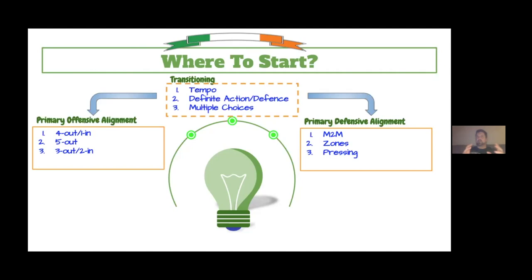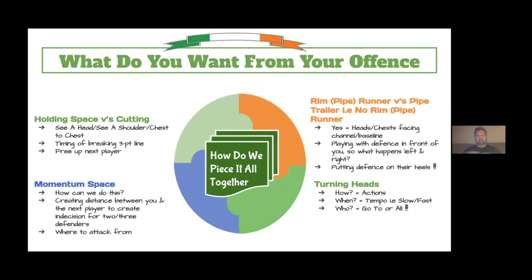Do we want to have a definite action against the defense, or do we want multiple actions where the defense doesn't really know what we're trying to do? What we're going to start on is our primary offense alignment. In terms of what you want from your offense, we'll talk about holding space and cutting — a major thing for all of us right now: when do players cut, how many players cut at any one time, how do we hold space on the three-point line, what are the cues for us to cut, and when do we break the three-point line? And when we do, are we looking to post up, finish cuts at the rim, or free up the next guy?